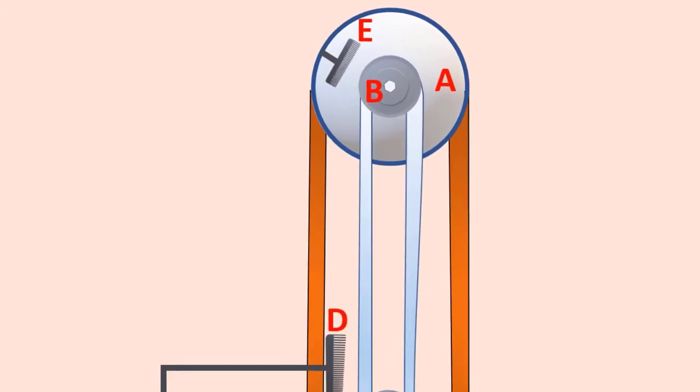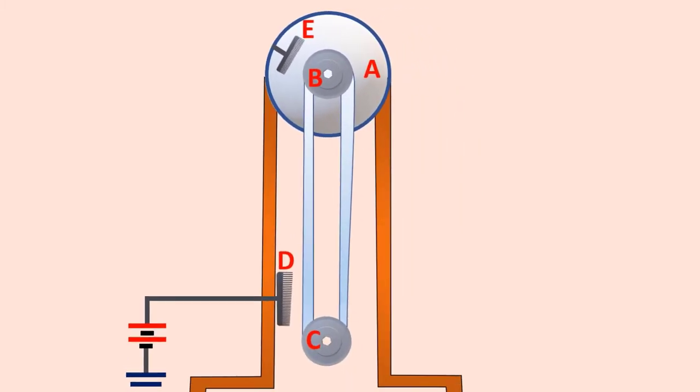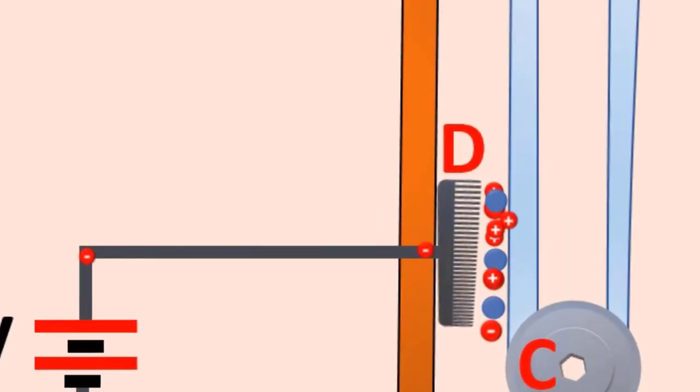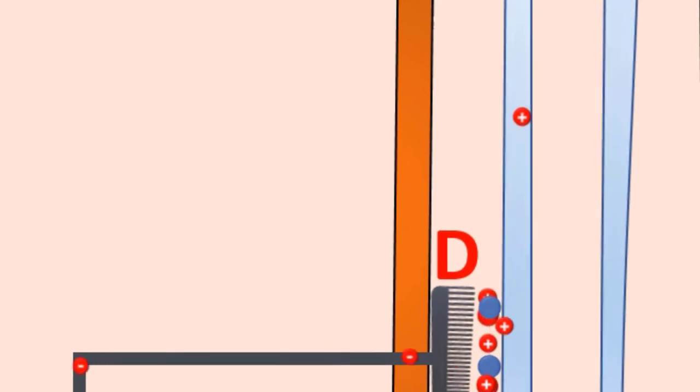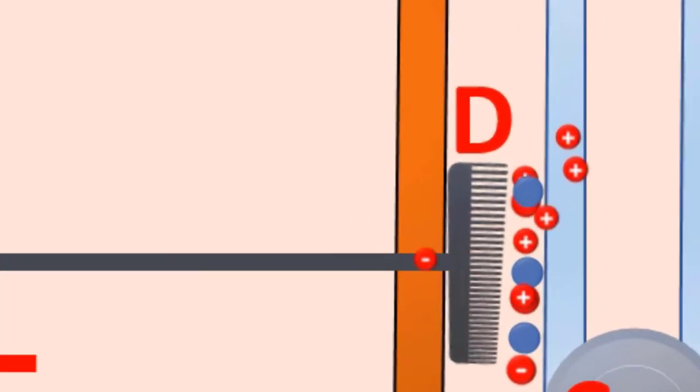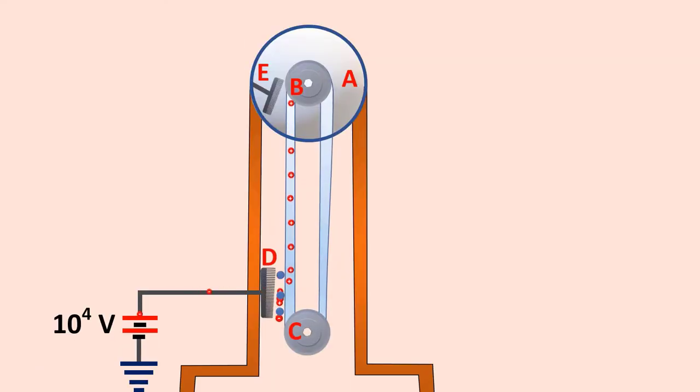Working of a Van de Graaff generator: There is a high electric field near the comb D, so air between the belt and comb D gets ionized due to the action of points. The positive charges are pushed towards the belt and the negative charges are attracted towards the comb D. The positive charges stick to the belt and move up.